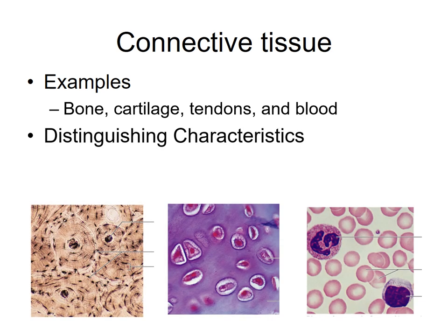Let's talk about distinguishing characteristics. With epithelial tissue, the distinguishing characteristics were free space and cells tightly compacted. In thinking about the distinguishing characteristics, let's look at three examples of connective tissue. Here on the left — do you know what kind of tissue this is? If you said bone, you are correct. If you said cartilage for the next, you are correct. And if you said blood for the last, you are correct. So what, in terms of distinguishing characteristics, does bone, cartilage, and blood have in common?